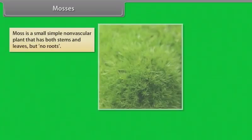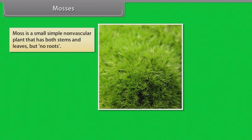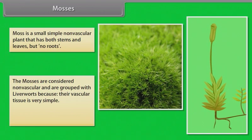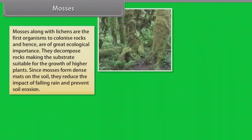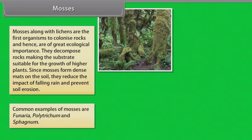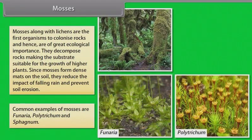Moss is a small simple non-vascular plant that has both stems and leaves but no roots. The mosses are considered non-vascular and are grouped with liverworts because their vascular tissue is very simple. Both of them have similar life cycle. Mosses along with lichens are the first organisms to colonize rocks and hence are of great ecological importance. They decompose rocks making the substrate suitable for the growth of higher plants. Since mosses form dense mats on the soil, they reduce the impact of falling rain and prevent soil erosion.